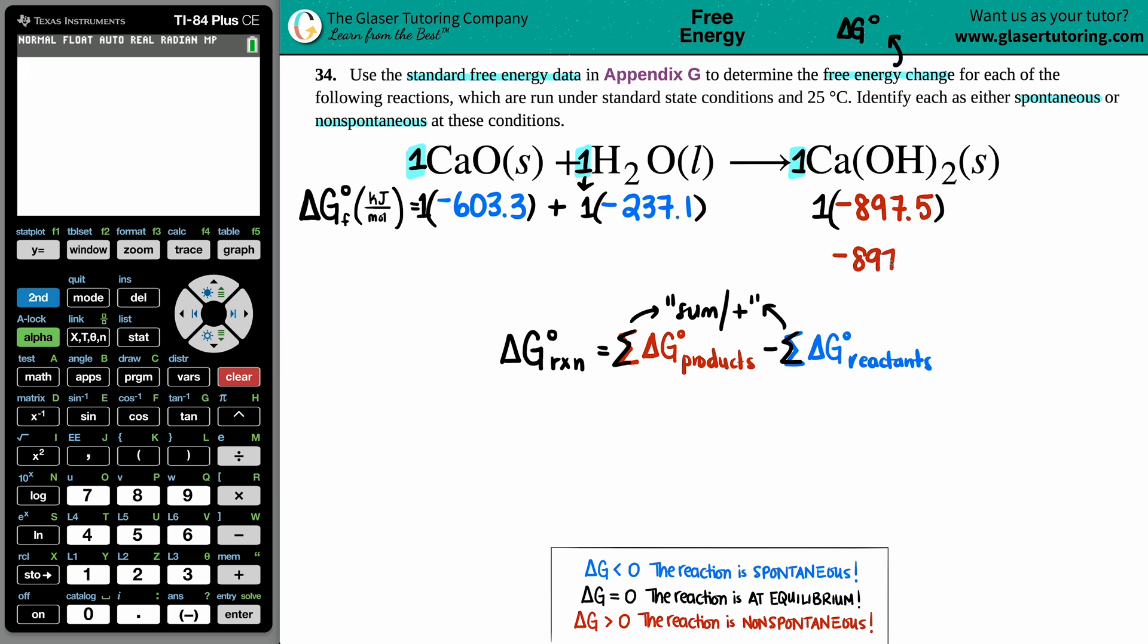Now I'm going to use my calculator to figure out what is that value. So -603.3 plus -237.1, and I get -840.4. Here are my two values now that I'm going to plug into my equation.